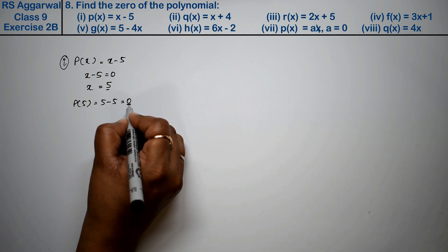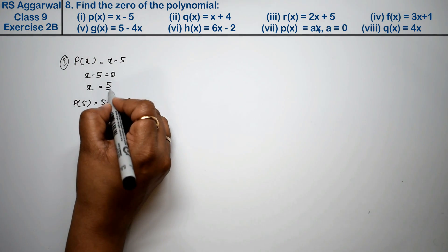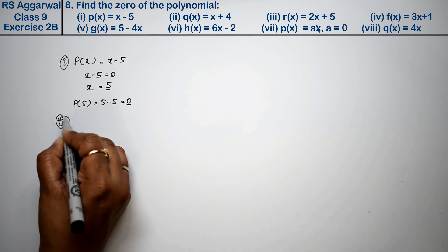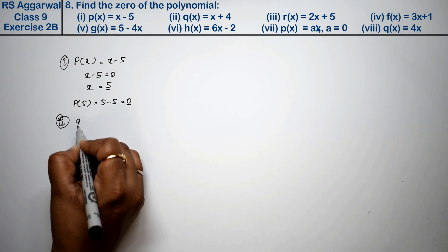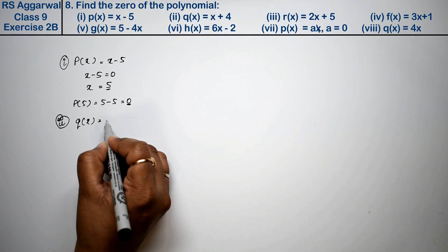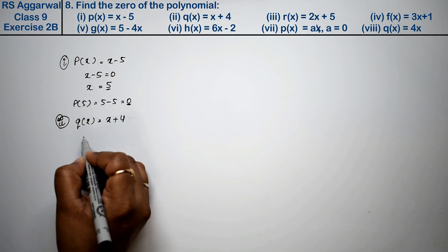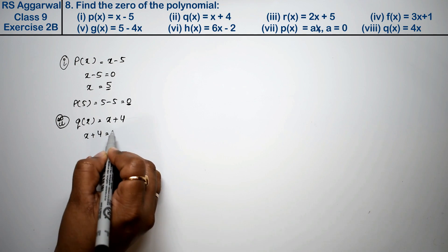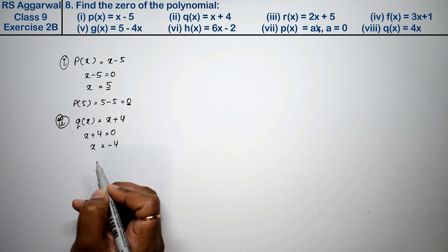Second part: q(x) equals x plus 4. Setting x plus 4 equals 0, what will be the value of x? Minus 4.